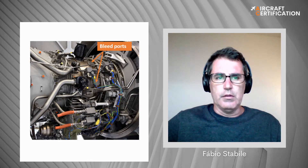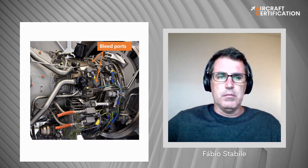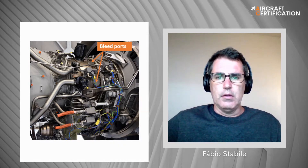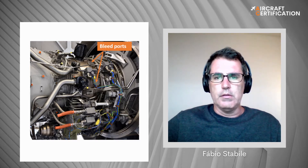It seems that the bleed is essentially hot, high-pressure compressed air, right? Yes, in fact this is hot air. Hot air can damage the aircraft in case of failure of these ducts. This picture shows a few engine bleed ports. In this particular picture, the engine bleed ports are indicated, and this is the location where the bleed is extracted from.